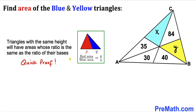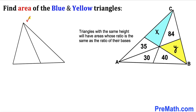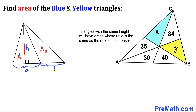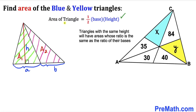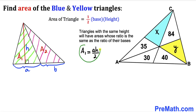Here's a quick proof. Consider a triangle consisting of two smaller triangles. Assume the left triangle has area a₁ and the right has area a₂, with a shared height h. The base of the left triangle is a and the base of the right is b. Using the triangle area formula — area equals one-half times base times height — the area a₁ equals (a × h) / 2.